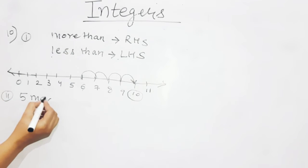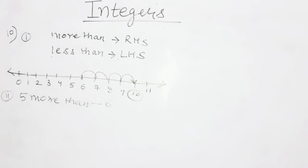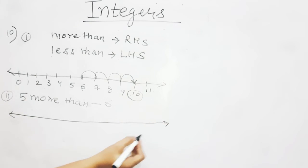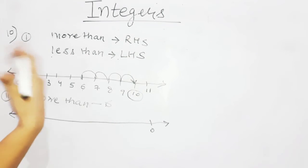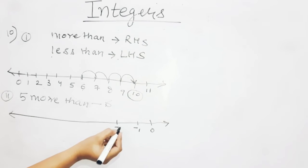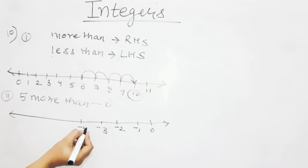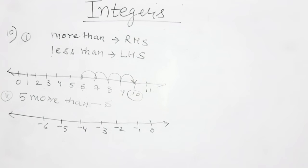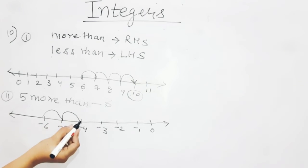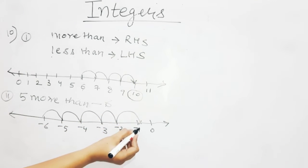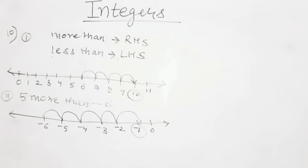Second option: 5 more than minus 6. 'More than' means right hand side. Draw the number line with minus 6. From minus 6, move 5 steps to the right: minus 5, minus 4, minus 3, minus 2, minus 1. So the answer is minus 1.